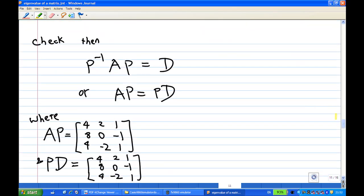So, all you need to check now is P inverse AP equals D. That means that AP equals P times D. I have already multiplied that A times P is [4,2,1; 8,0,-1; 4,-2,1]. And P times D also gives you the same matrix. In fact, I am going to show you how to use Casio fx-9860 to find AP and PD.